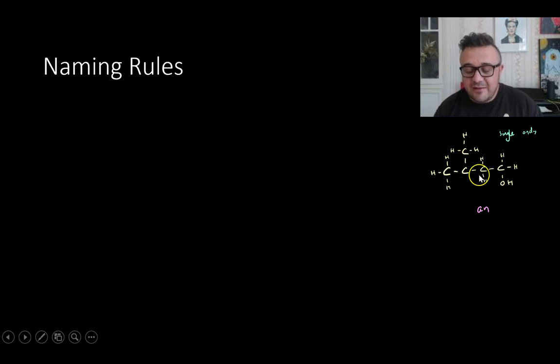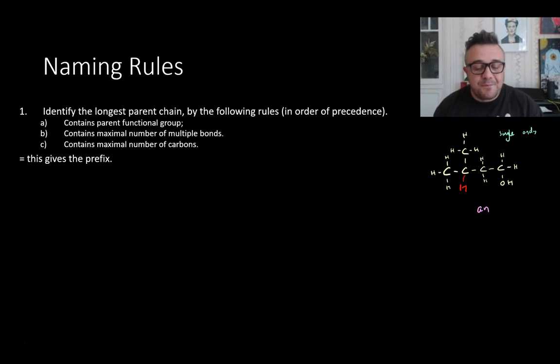You'll note that each carbon has four bonds, except one, which I have left off. This should have an H here. So this has an H there now, so all the bonds. So the first step is we identify the longest parent chain by following the rules in order of precedence. There's a bit here.